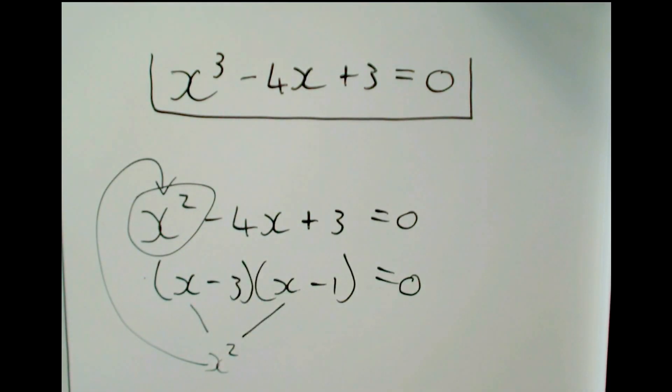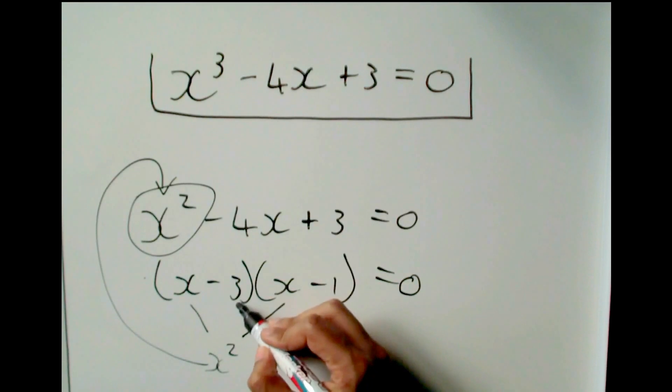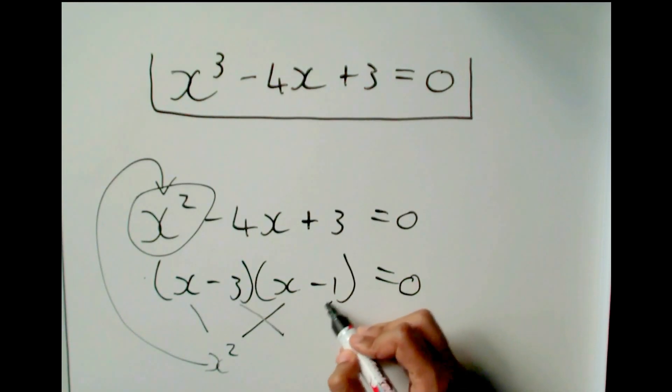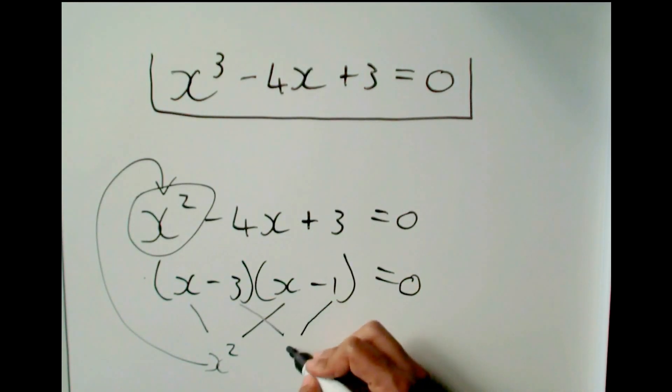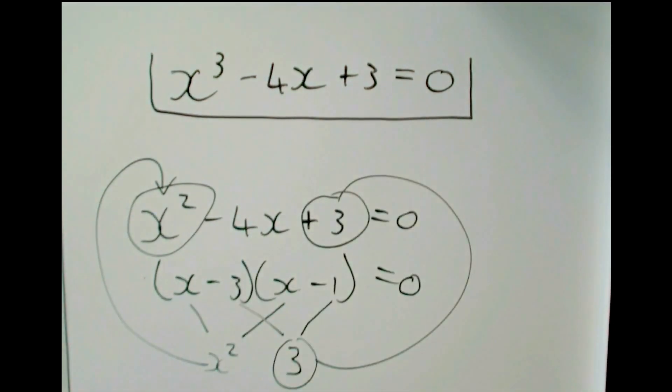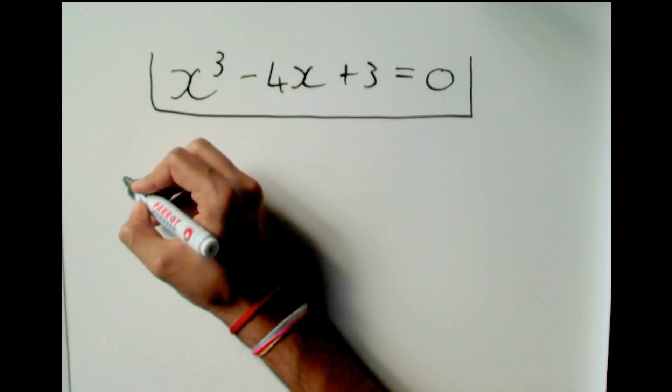And the same thing happens with the last term. If I took this and this and I multiply them together, I get 3, which is the same as the last term there. So we know that if we multiply the first term and the first term, and the last term and the last term, we end up with the numbers from our original unfactorized version. And we will be using this knowledge to do the cubic version.